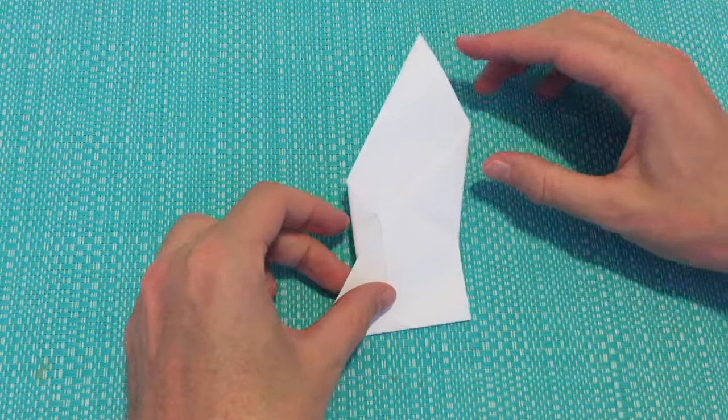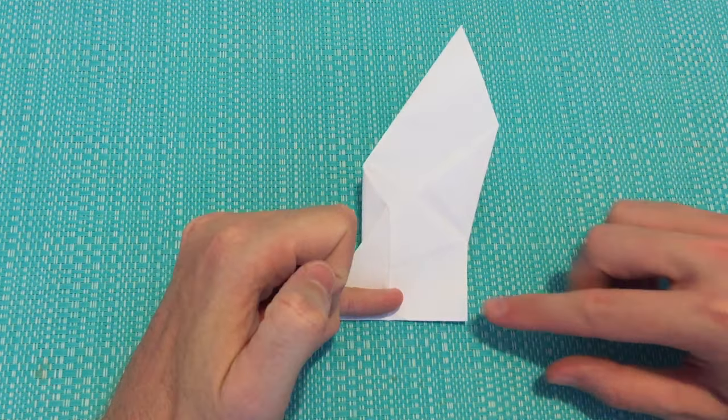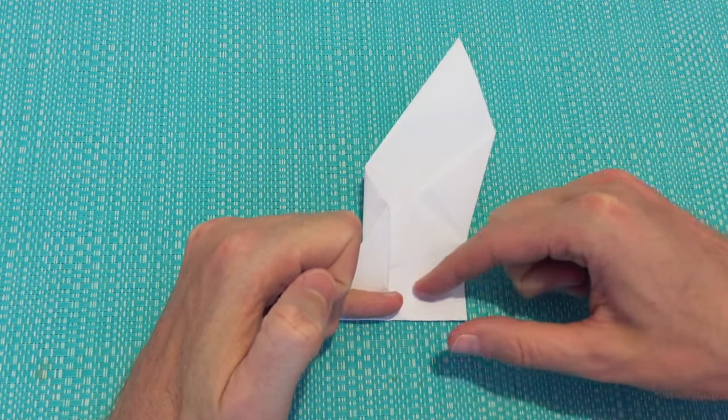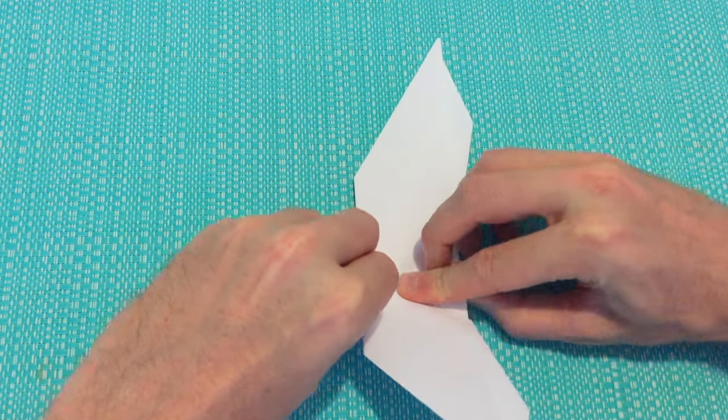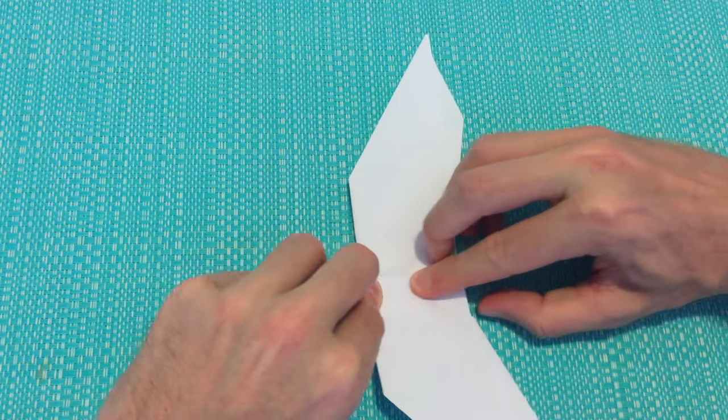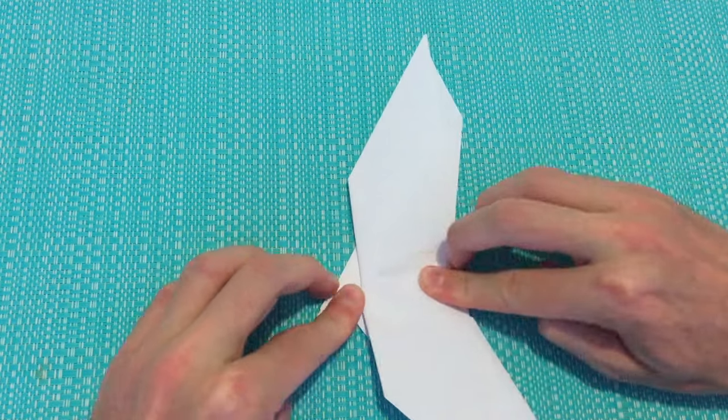Then we're going to fold each of the wings down. So for this one, we'll have about one finger width between the bottom and where we create our crease. So bring the first wing down. Press firmly.